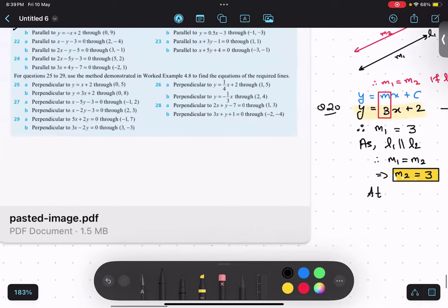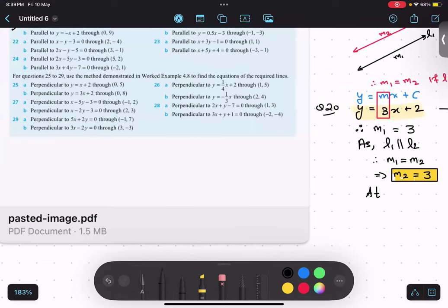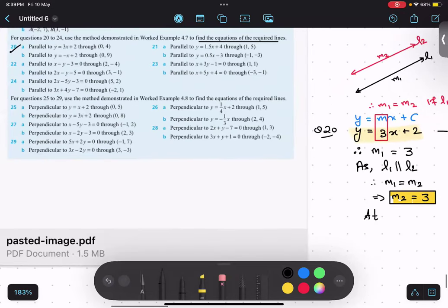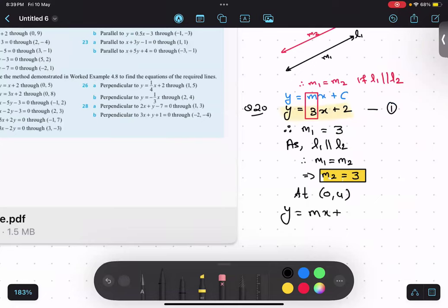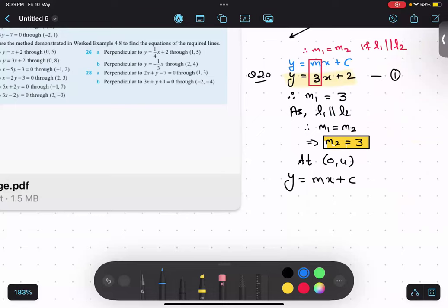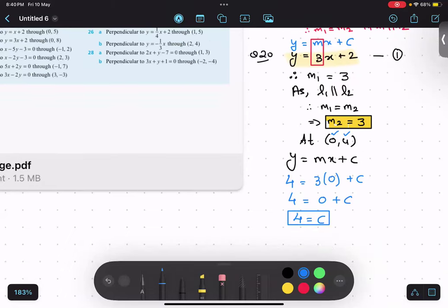So it is passing through at (0,4). So y equals mx plus c. What is y in this case? Y is 4. So I will write 4. And m value is 3. And x value is 0. Any doubt in this? No, sir. So I got my c value. Therefore, y equals mx plus c. Once again, 3x plus 4 is my required equation of the line.